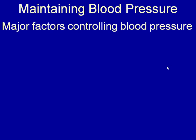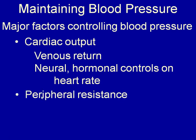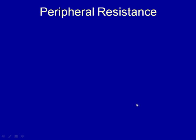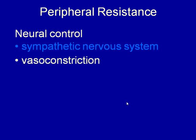Factors controlling blood pressure include cardiac output, peripheral resistance, and blood volume. In a healthy individual, blood volume and cardiac output are fairly constant, so peripheral resistance is the main factor used to adjust blood pressure. Peripheral resistance can be controlled through the nervous system — the vasomotor nerves of the sympathetic system cause vasoconstriction when activated.